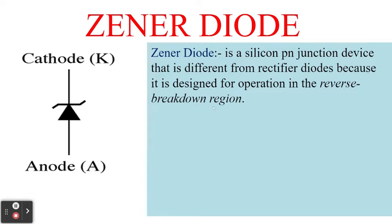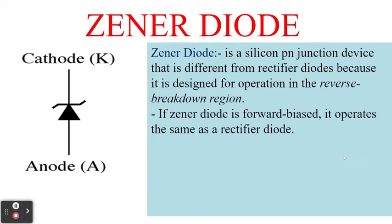In other words, the Zener diode, in order for it to do its job of maintaining a constant voltage, must be connected in reverse bias. The cathode must be on the positive side and the anode must be connected to the ground or to the negative side. If the Zener diode is connected in forward bias, it will simply operate like a rectifier diode.